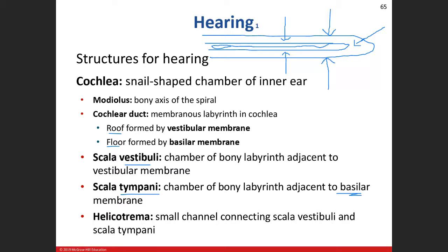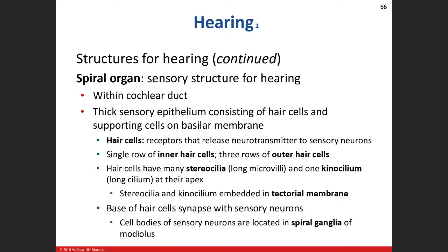The oval window is up at the scala vestibuli end. When sound waves beat against the tympanic membrane, they vibrate the auditory ossicles, and the footplate of the stapes beats against the oval window, creating pressure waves. Those waves travel through the scala vestibuli and will eventually push on the vestibular membrane — the roof of the cochlear duct — displacing it and creating pressure waves that move downward toward the spiral organ and basilar membrane.